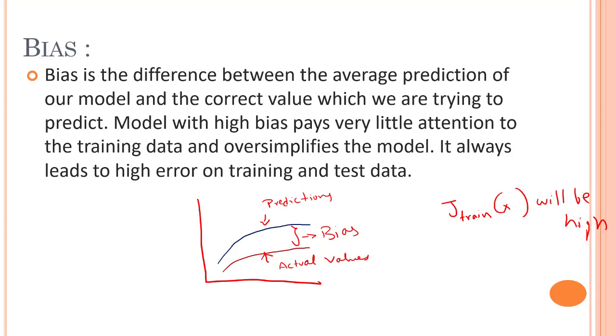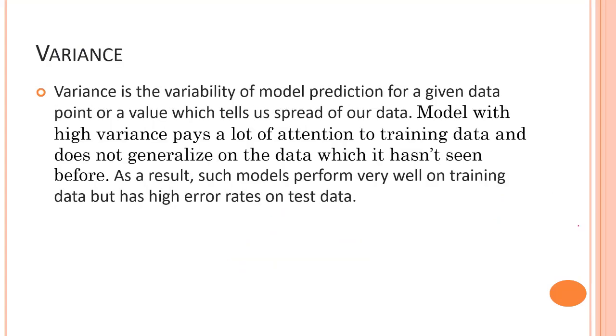Variance is the very opposite of bias. During training, it allows our model to see the data a certain number of times to find patterns in it. If it does not work on the data for long enough, it will not find patterns and bias occurs. On the other hand, if our model is allowed to view the data too many times, it will learn very well for only that data. It will capture most patterns in the data, but it will also learn from unnecessary data present too, making our model overfit.